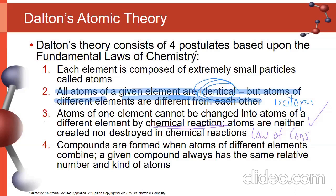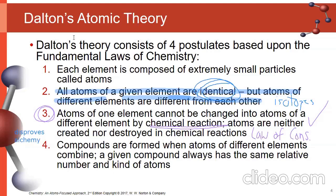Postulate three ultimately disproves the practice of alchemy. If you think about what was going on in the Middle Ages — by the time we hit the 1700s, Dalton is working well out of that era in Europe, but alchemy was still somewhat common. Dalton's atomic theory put the final nail in the coffin of alchemy by showing it is impossible: the law of conservation of matter says it can never happen.